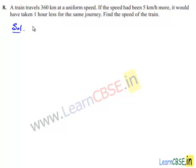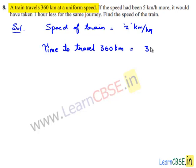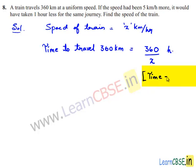Let us assume the speed of the train is x km per hour. Then the time taken is 360 divided by x hours, because time is equal to distance by speed.